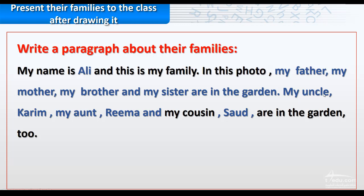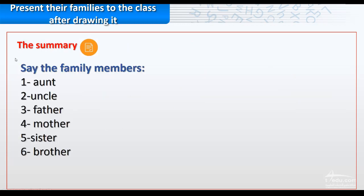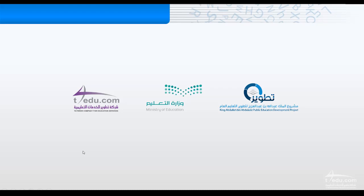My uncle, my aunt, and my cousin — before the last one we use 'and' — cousin Saud are in the garden too. Summary of family members: number one, aunt; number two, uncle; number three, father; number four, mother; number five, sister; number six, brother. Thank you.